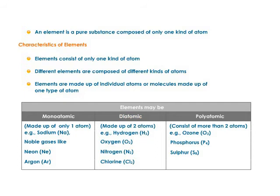When there are more than two atoms in an element's molecule, it is called a polyatomic molecule. For example, ozone has three oxygen atoms, and sulfur has eight sulfur atoms.